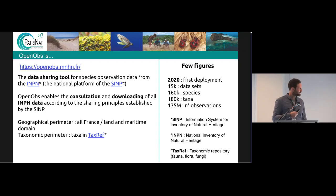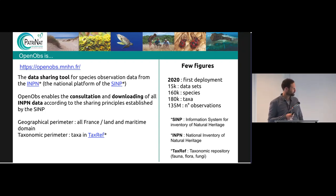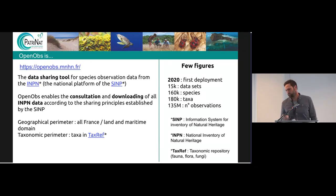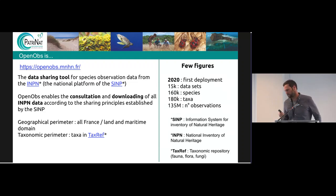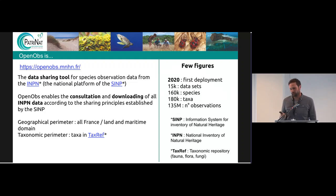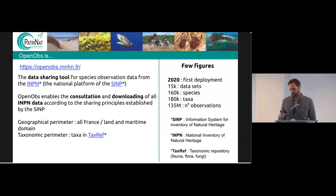OpenObs is built on data from the INPN, that is the National Inventory of Natural Heritage. It enables the consultation and downloading of all the INPN data according to the sharing principles established by the SINP, the Information System for Inventory of Natural Heritage. The geographical perimeter is all of France for land and maritime domains, and the taxonomic scope covers all taxa present in the TaxRef repository.